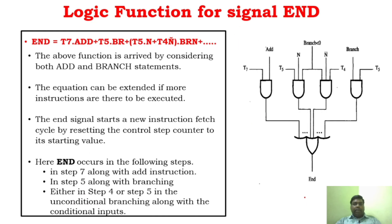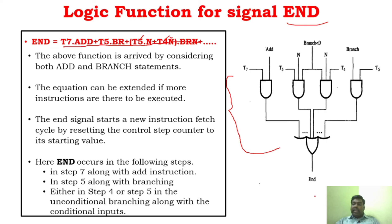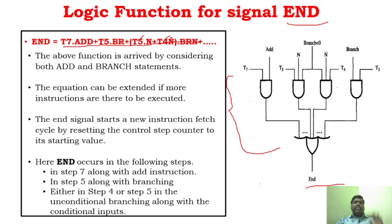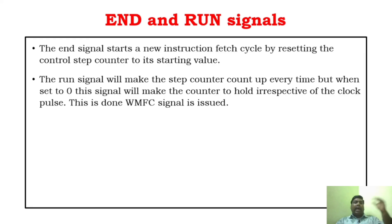Similarly, here is another example — the end signal. You can see the sequence that generates the end signal: at time slot 7 along with the add instruction, at time slot 5 along with the branch instruction, and also at time slots 5 and 4 along with the branch instruction for unconditional branching. That can be represented by a corresponding equation, and this is the circuitry for generating the end control signal. As I said, the end control signal will reset the counter and start fetching the next instruction — that is the termination of that particular instruction.